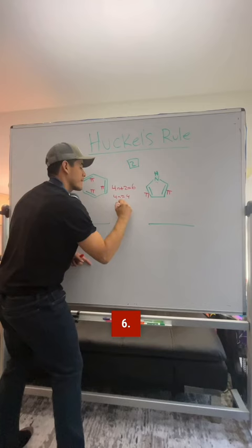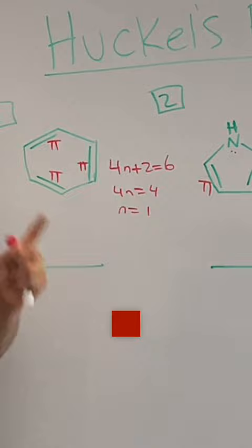Solve for n, and if you get a whole number n equals zero, one, two, three, four, five, six, then you are going to be an aromatic structure.